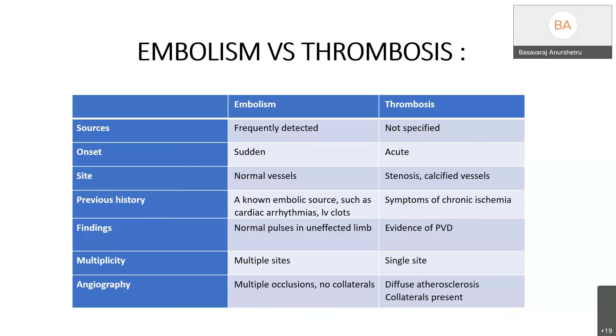In angiography findings, there may be multiple occlusions with no collaterals in embolism, whereas there is diffuse atherosclerosis and collaterals are present in thrombosis.